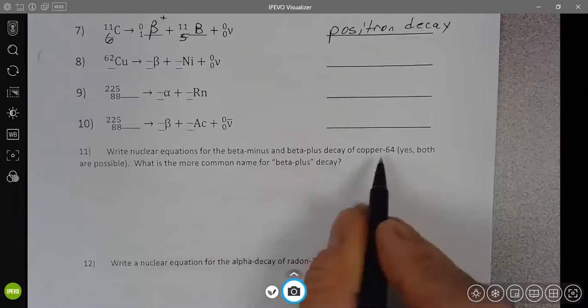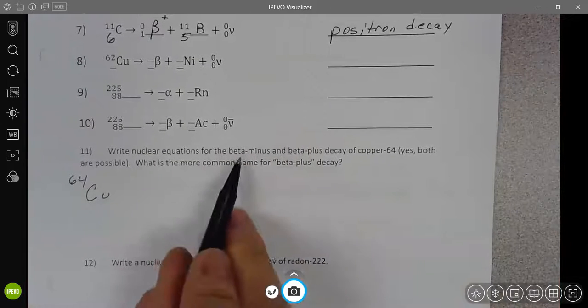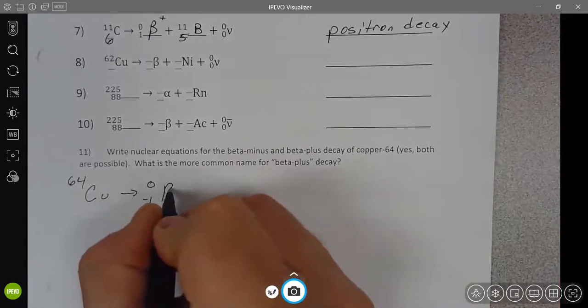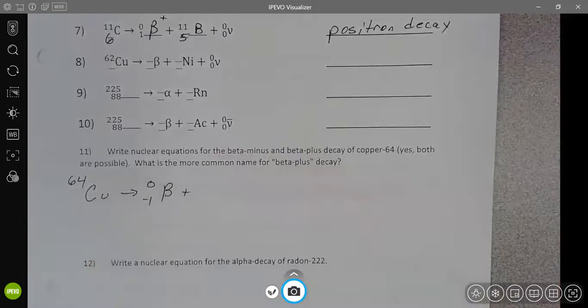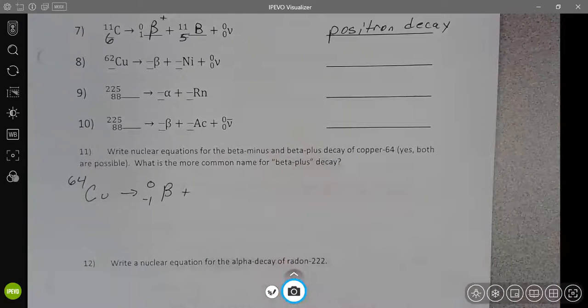And then you also want to be able to write these decays. So you would want to be able to write copper 64. And if it decays by beta minus, then you know it's going to be zero and one minus and beta. And what else is the other product there?